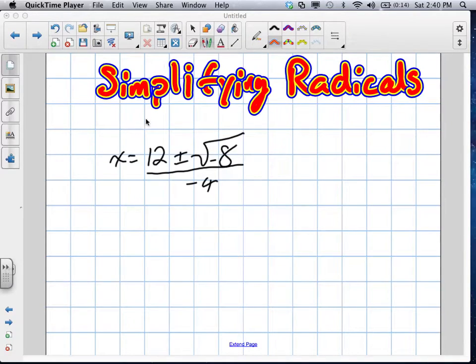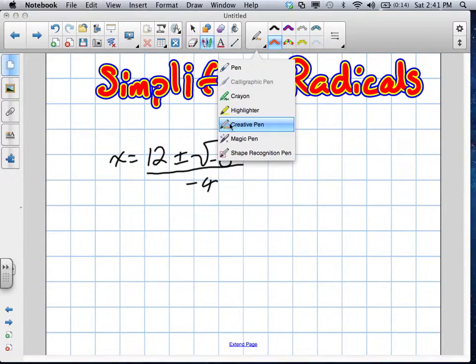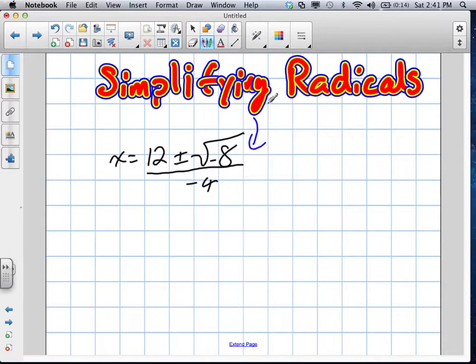Okay, so we're simplifying radicals now. You've done a quadratic formula, you've gotten this far, and you've got negative 8. So what that tells us is essentially we're not going to have an x-intercept here. But they do want us to put this in simplest form. So my goal is I'm going to actually look at this term here, negative 8.